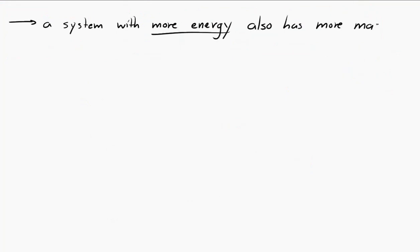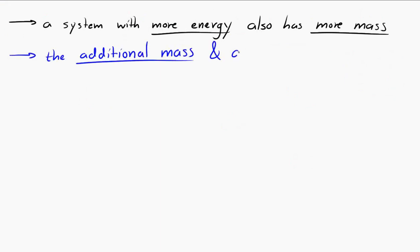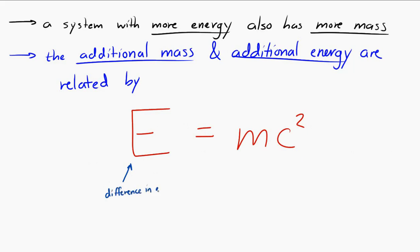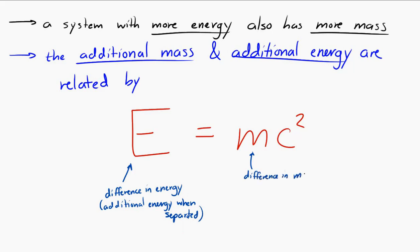The additional mass corresponds to the additional energy through the equation E = mc². In this equation, E is the difference in energy between the two states — how much more energy the nucleons have when separated. M is the difference in mass — how much more mass the nucleons have when separated. And c is the speed of light.